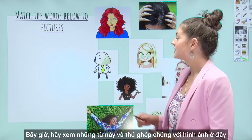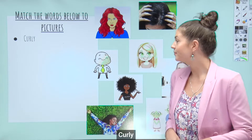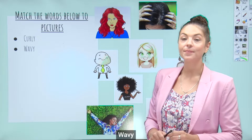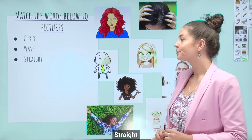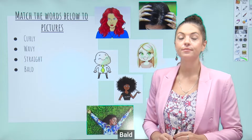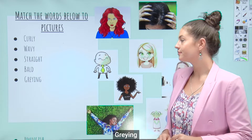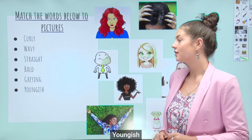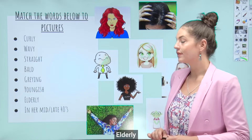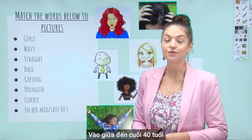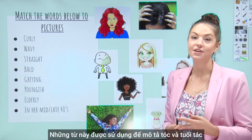Now let's look at these words and try to match them to the pictures. Curly. Wavy. Straight. Bald. Greying. Youngish. Elderly. In her mid to late 40s. These words are used to describe hair and age. Let's see if we can match them to their correct pictures.